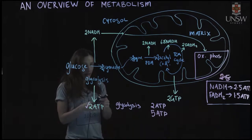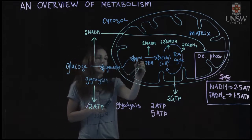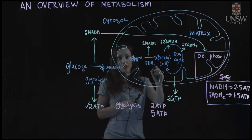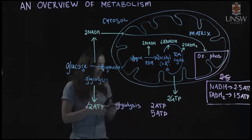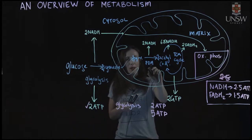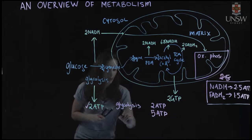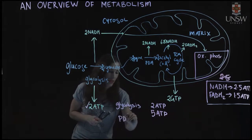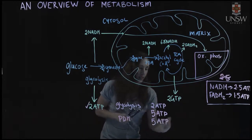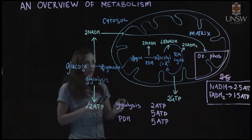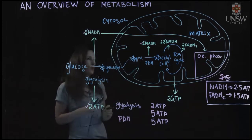The next step is pyruvate. Our pyruvate came into the mitochondria, was oxidized by pyruvate dehydrogenase, and we have 2 NADH produced there. Again, we multiply: 2 NADH × 2.5 from pyruvate dehydrogenase gives us another 5 ATP ultimately being produced.